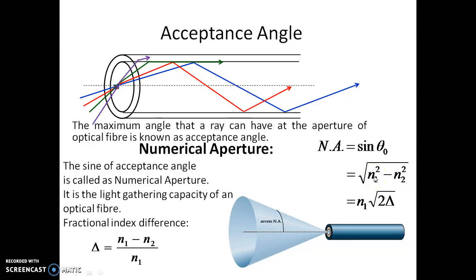It equals the square root of n₁² minus n₂², where n₁ is the refractive index of the core and n₂ is the refractive index of the cladding. It is also given by n₁ times square root of 2Δ, where Δ is the fractional index difference given by (n₁ - n₂)/n₁. Numerical aperture is a measure of the acceptance cone.